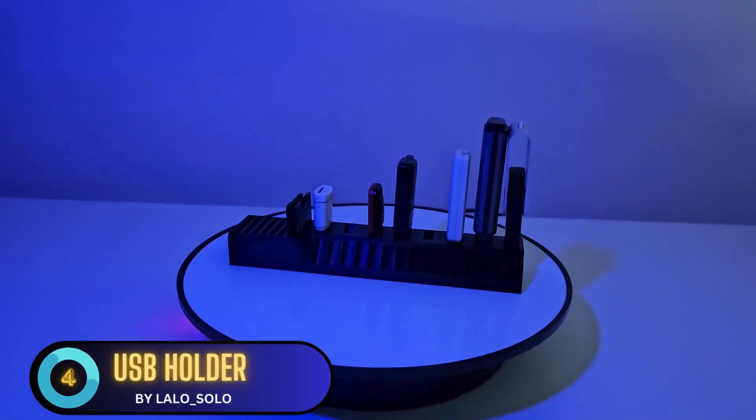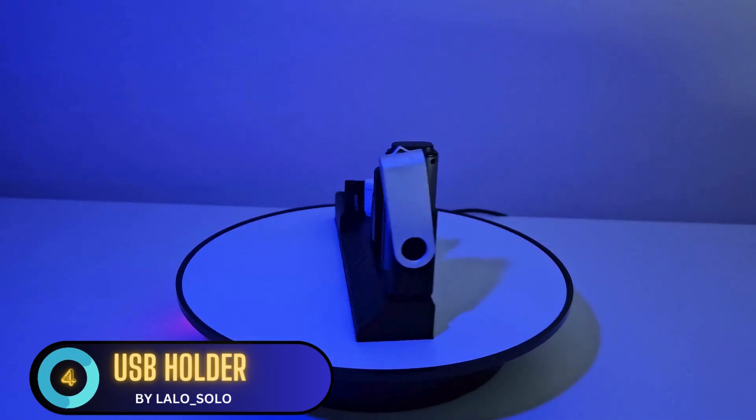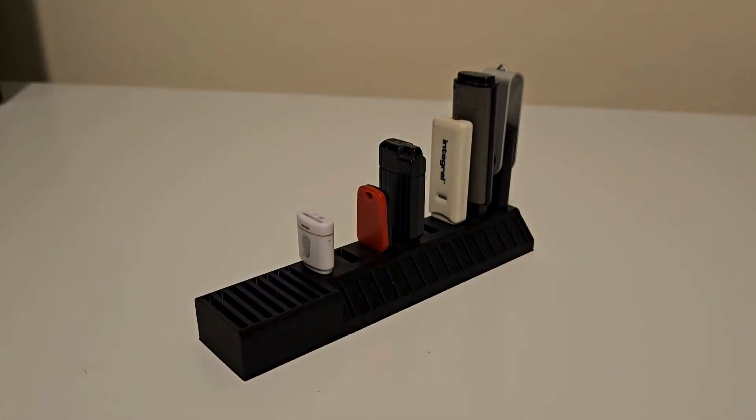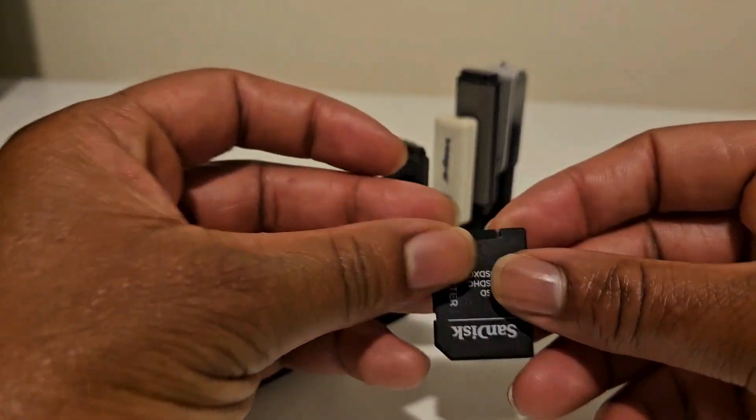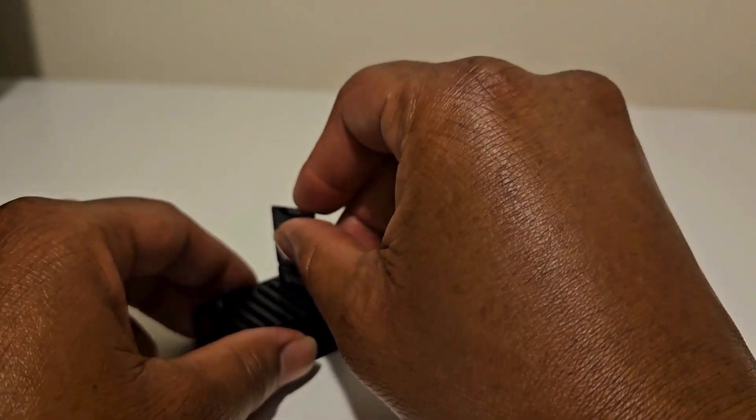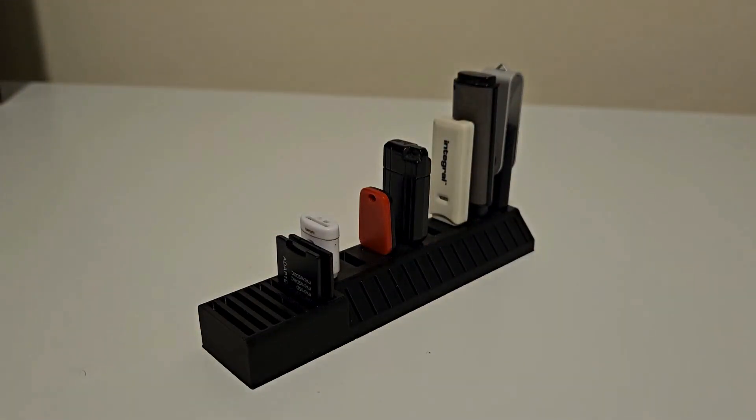Next, at number 4 we have the Organized USB Holder. This storage equipment can even hold SD and micro SD cards, storing most memory devices. It even can fit larger USBs, no problem.